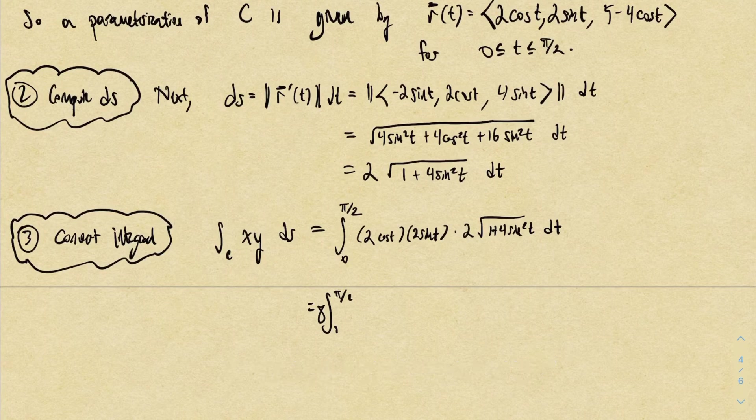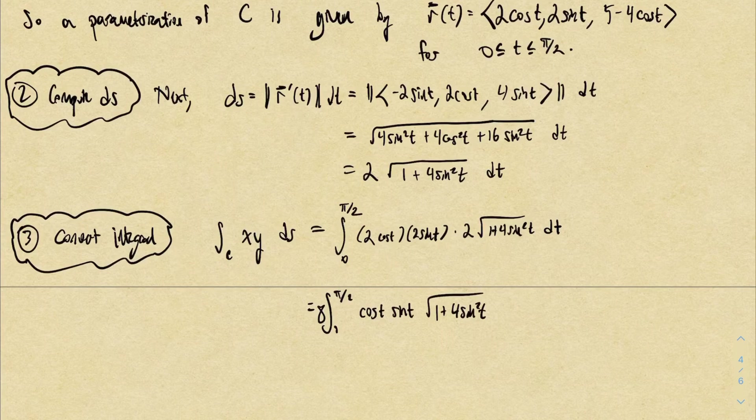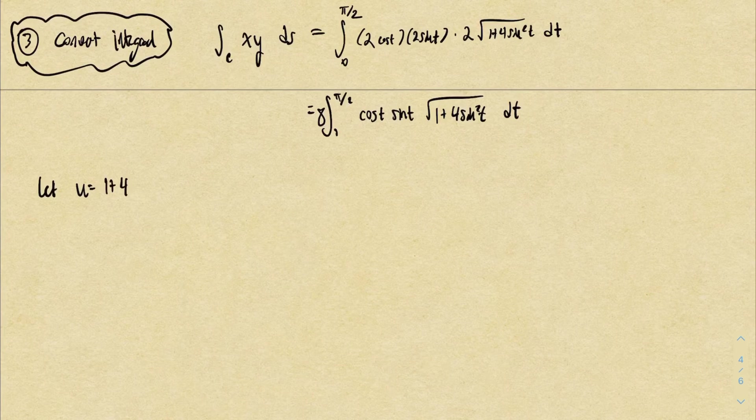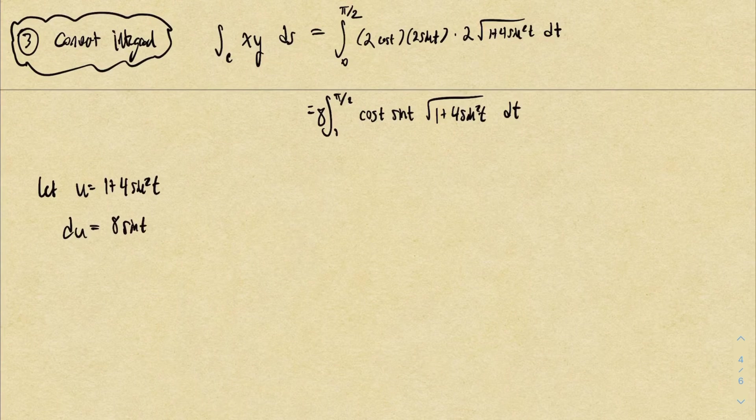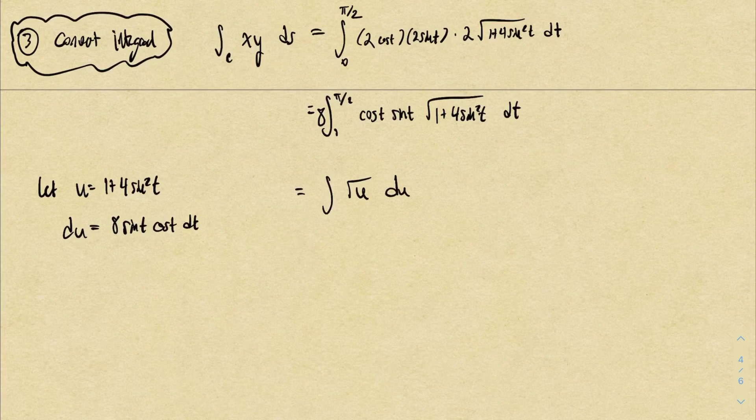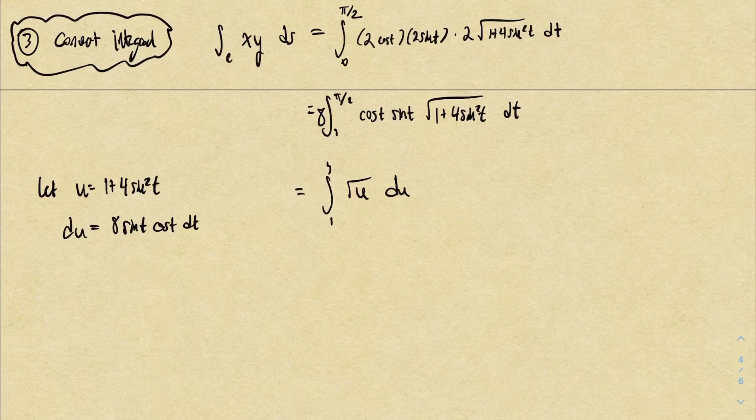2 times 2 times 2 is 8, pull that out front. And then this specific integral can be handled with a substitution. For example, if we call u the inside of the square root stuff, 1 plus 4 sine squared t, du in that case by the power rule I'll get an 8, and then by the chain rule sine of t times cosine t. Now that works pretty nicely because here I have cosine t sine t dt. When t is 0, sine is 0 so u is 1. When t is pi over 2, sine of pi over 2 is 1 so u is going to be 4 plus 1 which is 5. We get the square root of u du and then it's easy.